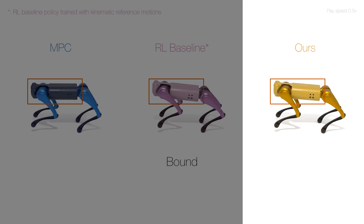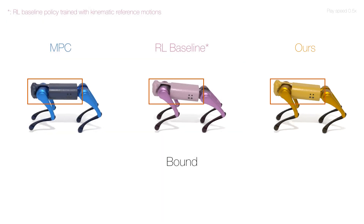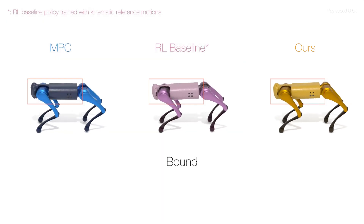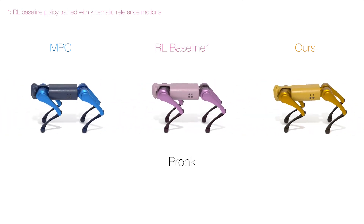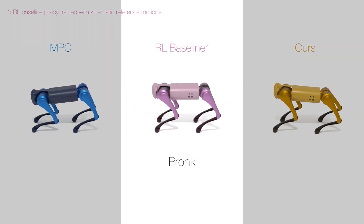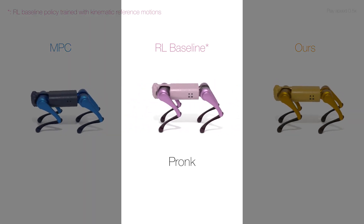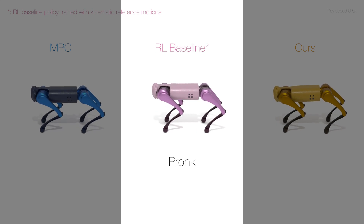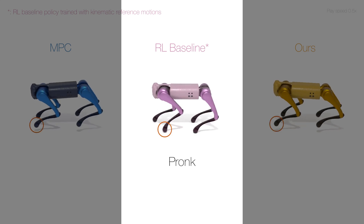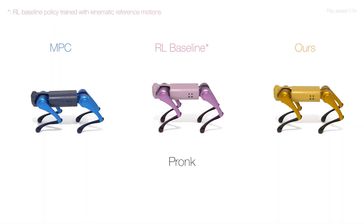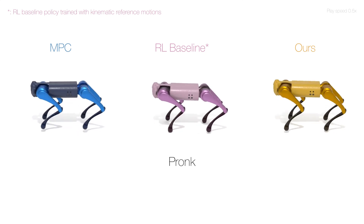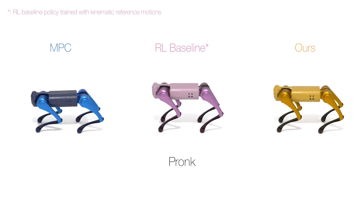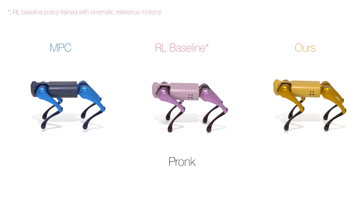As a result, it learns to produce small rotational movements rather than strictly adhering to the reference motions. The baseline policy fails to produce proper motions due to its imitation of reference motions that ignore the dynamic effects of flying phases. This highlights the importance of incorporating dynamic effects in generating reference motions through model-based control demonstrations.